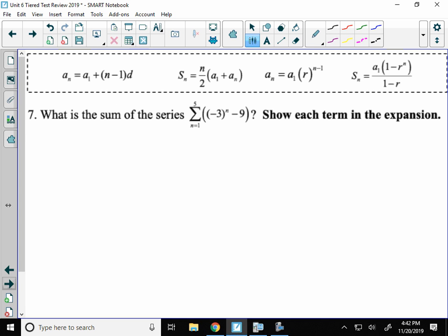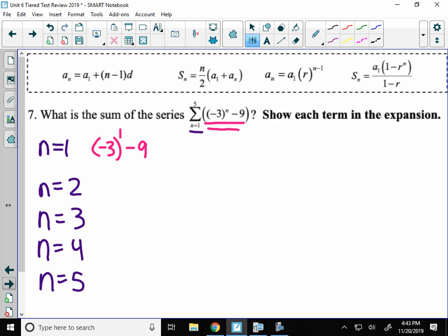Number 7, what is the sum given here? And you need to show each term in the expansion. So a couple ways that you can do that. I'll show you the way that I think it's fastest. I need to list out the terms for n equals, it says, from 1 to 5. Now, two ways to do this. First way you can do this is to put that n into the formula. So you would have to take negative 3 to the first minus 9, which would end up being negative 12. Then you would have to take negative 3 squared minus 9. 9 minus 9 is 0. And you would do that for each and every one of those. And that's fine.